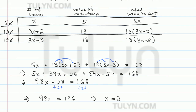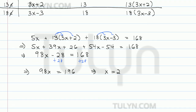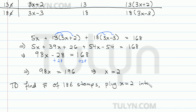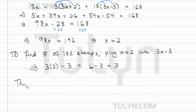So now we've solved for x, but let's remember what x was — it was the number of 5 cent stamps. What we're trying to find is the number of 18 cent stamps. So we plug x equals 2 into the original formula for the number of 18 cent stamps, which was 3x minus 3. So 3 times 2 minus 3 is 6 minus 3, which is 3. So finally, there are 3 eighteen-cent stamps in the collection.